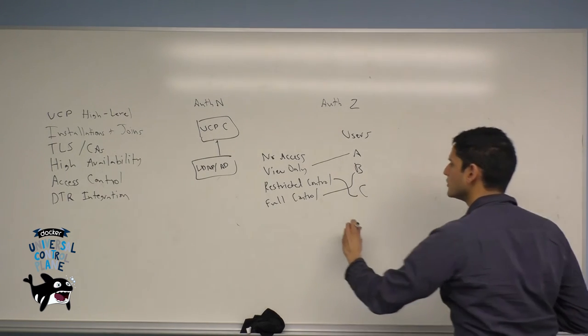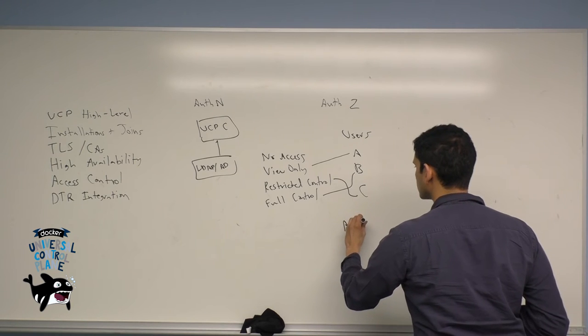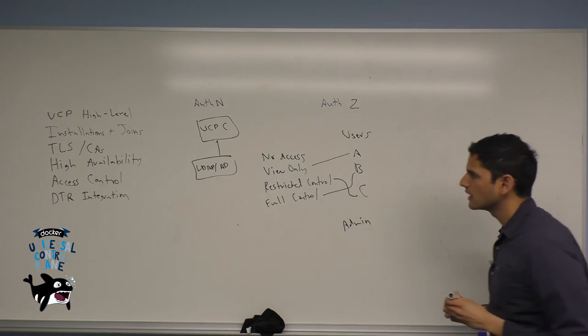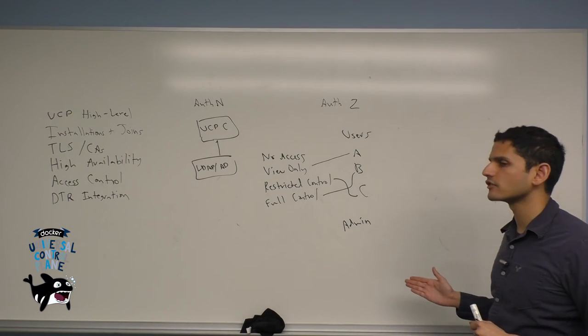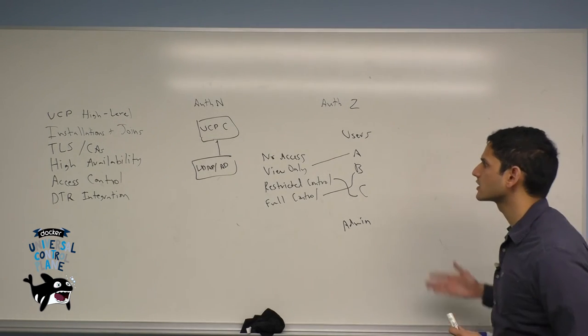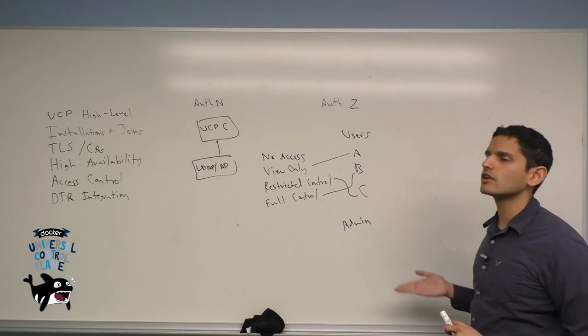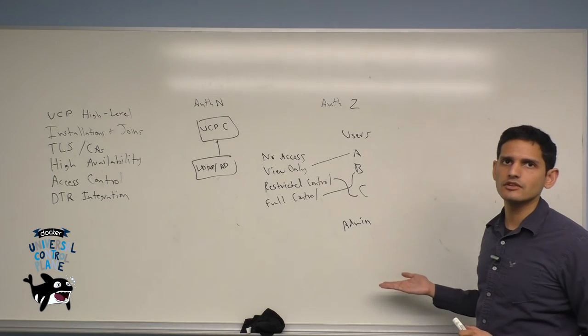Along with your normal users, as we mentioned, you have admin users, and any user can be made into an admin by another admin. Admins have full control by default, access to all resources, and they're also able to do things like create new users as well as to change and manage the settings within UCP.